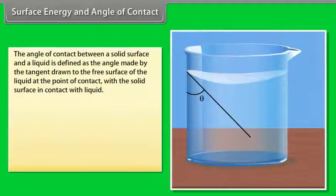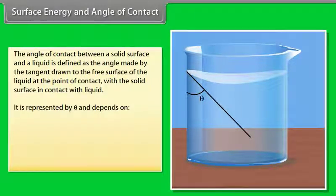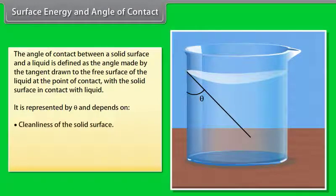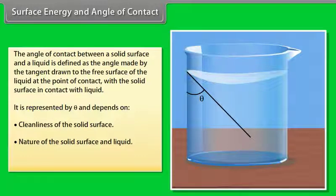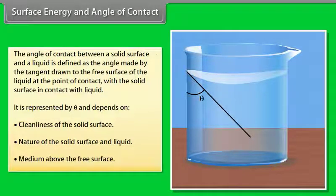The angle of contact between a solid surface and a liquid is defined as the angle made by the tangent drawn to the free surface of the liquid at the point of contact with the solid surface in contact with liquid. It is represented by theta and depends on cleanliness of the solid surface, nature of the solid surface and liquid, and medium above the free surface.